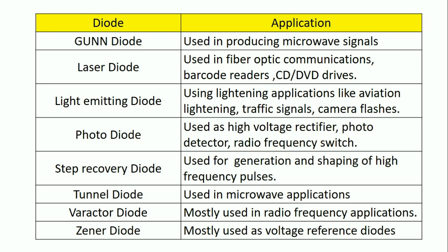Next is the light emitting diode. This light emitting diode is used in various applications like aviation lighting, traffic signals, camera flashes, and in every display system we can use light emitting diodes.